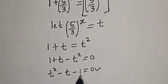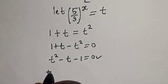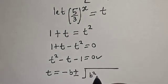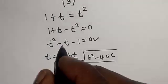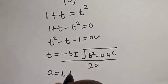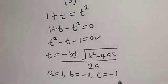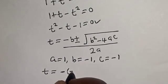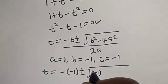This is a quadratic equation which can be solved using the quadratic formula: t equals negative b plus or minus the square root of b squared minus 4ac, all over 2a. From our equation, a equals 1, b equals negative 1, and c equals negative 1. Substituting, we get t equals negative times negative 1, plus or minus the square root of (negative 1) squared minus 4 times 1 times negative 1.